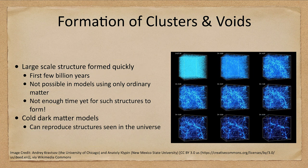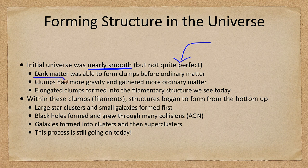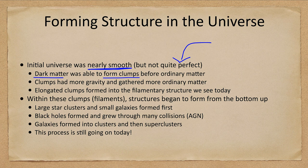How do we go about forming those structures? The initial universe was almost completely smooth. Since it was not quite perfect, dark matter was able to clump. Dark matter does not interact with light, energy, or other matter except through gravity, so it was able to form clumps while ordinary matter was still being affected by electromagnetic radiation. This gives us a jump start on forming the structures.